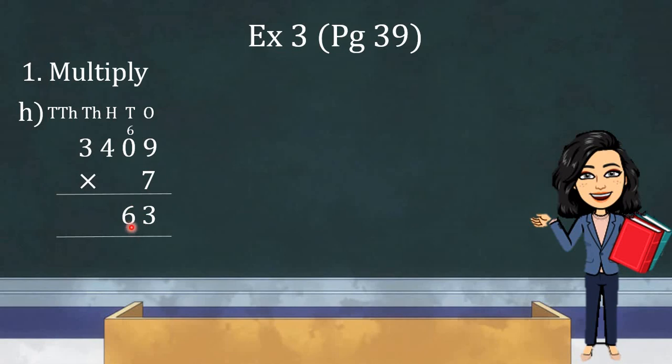Moving on to the 100's place. 7 times 4 is 28. So, we will keep 8 under 100's place and we will carry 2 to the 1000's place. Now, we will add this 2 in the answer of multiplication of 3 and 7.